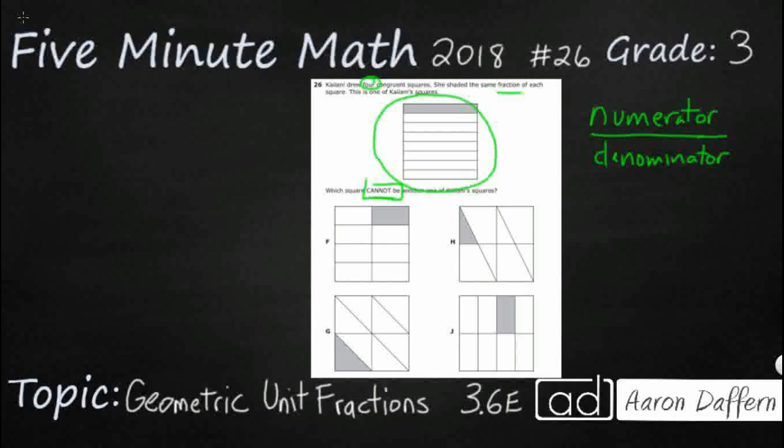So for this fraction up top, we're just looking at the shaded pieces. So it's going to have a numerator of one. The reason it's going to have a numerator of one is because there's only one part shaded up here. Now, the denominator is all the total pieces, including the one that you've already counted.